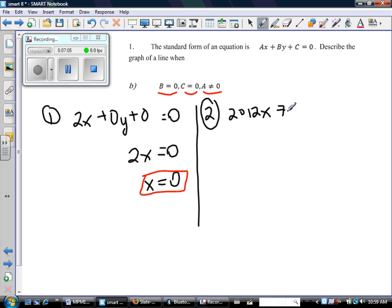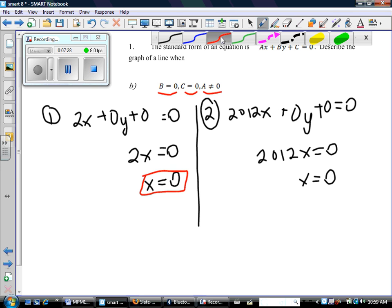So 2012x + 0y + 0 = 0. Boy, sometimes I miss my chalkboard. So again, that just becomes 2012x = 0. Well, that just becomes x = 0. So it didn't matter what I picked for A. No matter how fancy I tried to get, I ended up in both cases with x = 0.